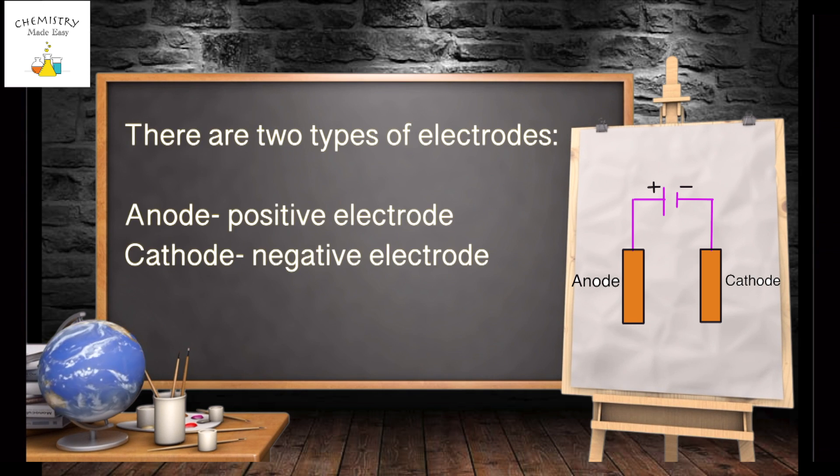There are two types of electrodes. Anode, positive electrode. Cathode, negative electrode.